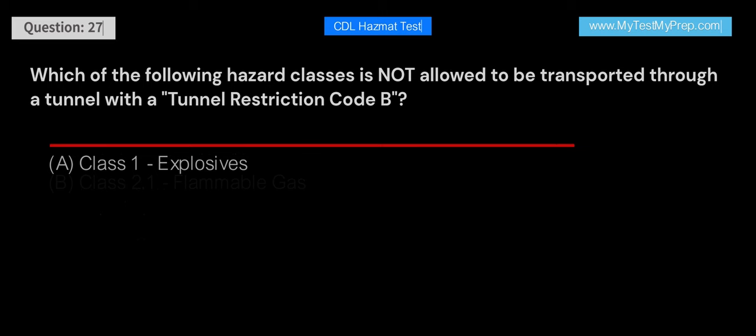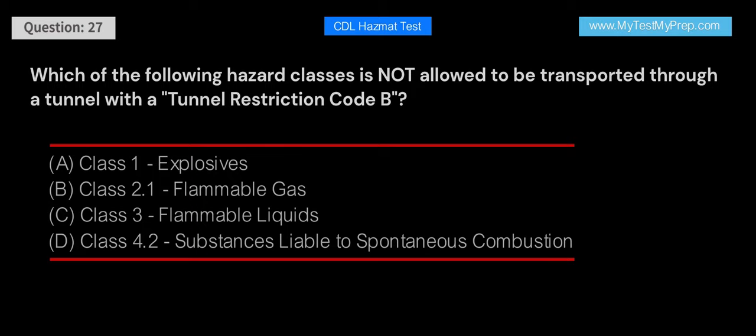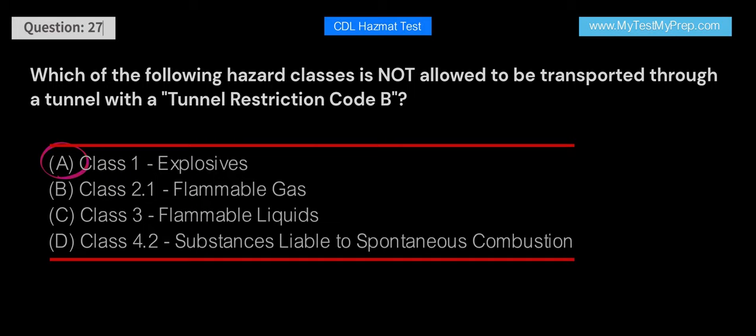Which of the following hazard classes is not allowed to be transported through a tunnel with a tunnel restriction code B? A. Class 1 Explosives. B. Class 2.1 Flammable Gas. C. Class 3 Flammable Liquids. D. Class 4.2 Substances Liable to Spontaneous Combustion. Answer: A. Class 1 Explosives are not allowed to be transported through a tunnel with a tunnel restriction code B. Tunnel restriction codes help ensure that hazardous materials with certain risks are not transported through confined spaces like tunnels, where incidents can have severe consequences.